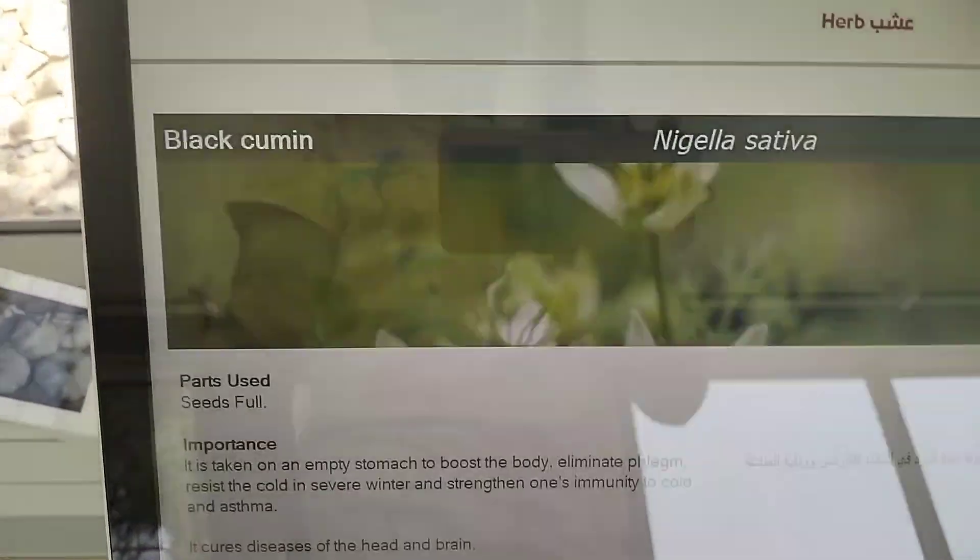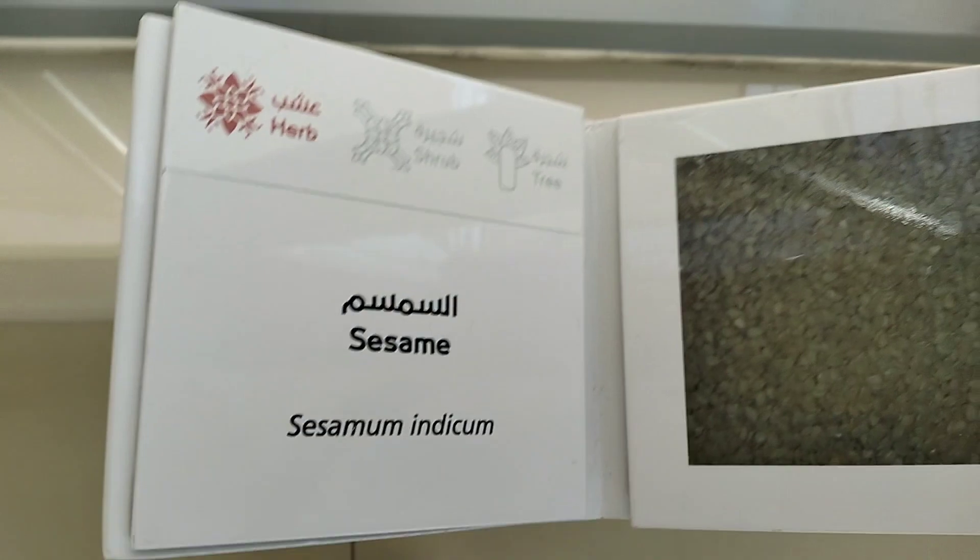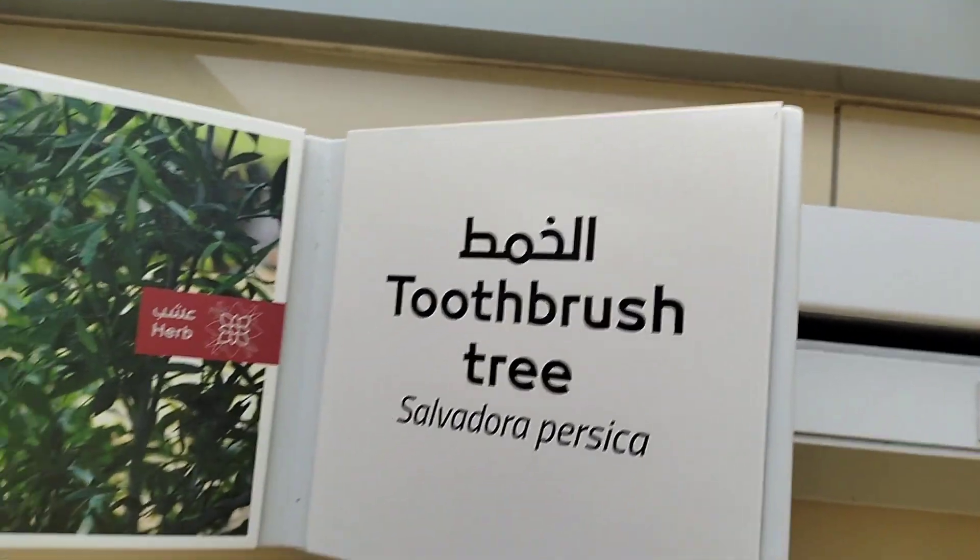This is a black human. This is all the seeds. And this is a soft flower. This is also a cotton tree. Toothbrush tree.